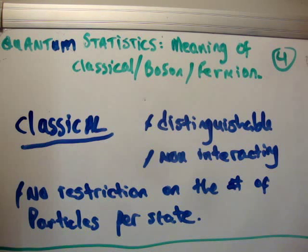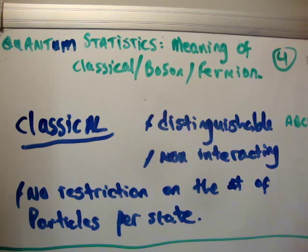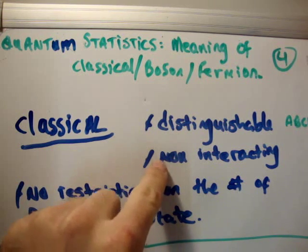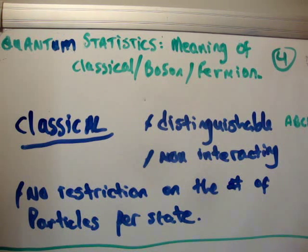Classical particles are distinguishable, so that means you can put a label on each of the particles and say which is which — so let's say we have A, B, C, and D. We can say which one's A, which one's B, and so on, and we can follow that particular particle throughout time. They are non-interacting, which means you can put as many particles as you want into any state — there's no restriction on the number of particles per state. So classical particles are distinguishable, non-interacting, and there is no restriction on the number of particles per state.